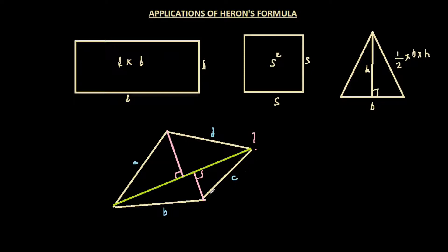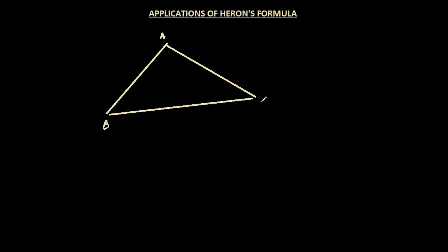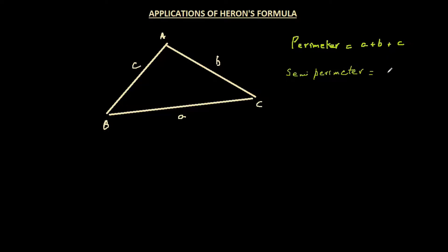These are complications we see in real life every day when dealing with land or quadrilaterals where only side lengths are known. Thanks to Heron, he developed a formula for finding the area of a triangle when all three sides are given. Taking triangle ABC, by convention: side opposite vertex A is 'a', opposite B is 'b', and opposite C is 'c'. The perimeter is a plus b plus c, and the semi-perimeter S is (a + b + c) divided by 2.